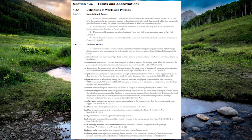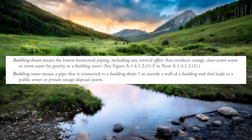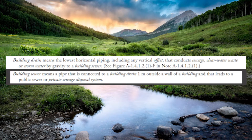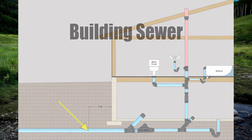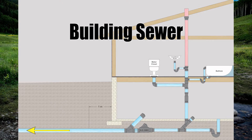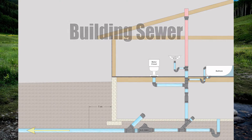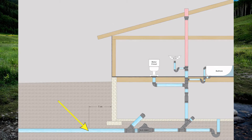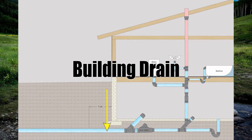The plumbing code has a number of definitions right near the beginning of the code in Section 1412, Defined Terms. Building sewer means a pipe that is connected to a building drain one meter outside a wall of a building, that leads to a public sewer or private sewage disposal system. So the building sewer begins one meter beside the building and travels all the way to either a septic tank or the city main.